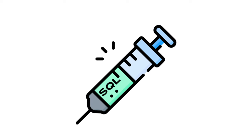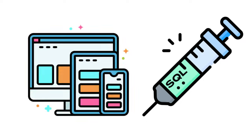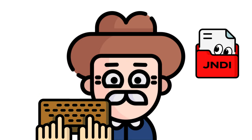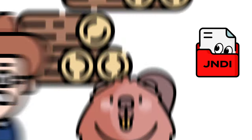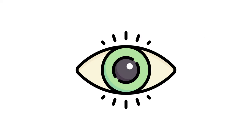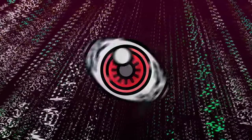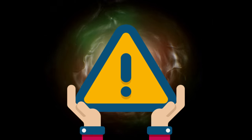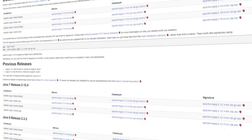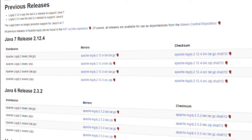Similar to SQL injection and cross-site scripting, if a user inputs a JNDI lookup as input and the logger logs it, it executes that lookup — allowing a hacker to pull remote resources and execute them within your app. When this was first discovered, there were 10 million attempts per hour to exploit this vulnerability. The most important thing you can do is update to the newest version of Log4j to stay protected.